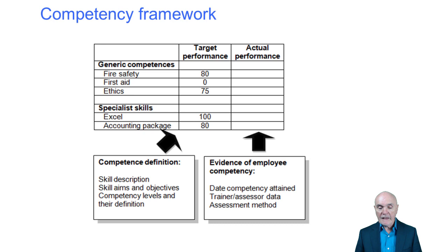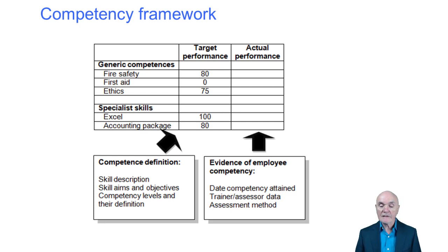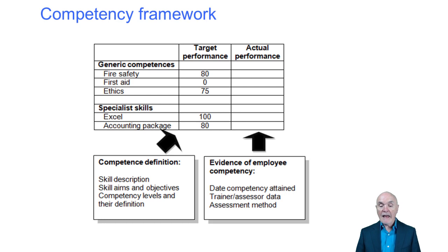What we put in the framework is the skill description, aims and objectives, competency levels, and how that can be measured. Then we put in evidence of employee competence — this could be self-assessed, assessed by a manager, or assessed by the recruiter — along with the date signed off.